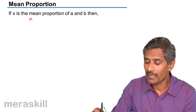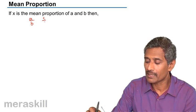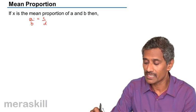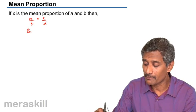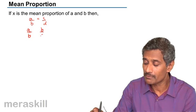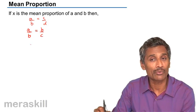We know that A by B and C by D, suppose they are equal, we say A, B, C and D are proportional. But suppose A by B and you have B by C and they are equal.